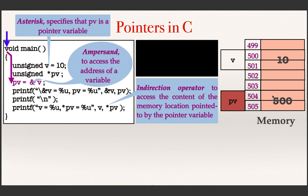That is what you can assign to a pointer variable — it can store the address of a memory location. If you declare a pointer variable, what you can store in its location is the address of a memory location. If you declare an unsigned variable like V, you can store an unsigned value like 10. If you declare a pointer variable like PV using unsigned *PV, then in the location for PV you can store the address of a memory location.